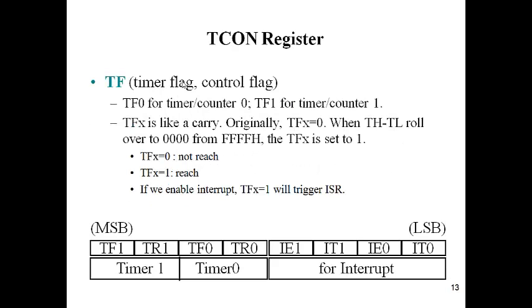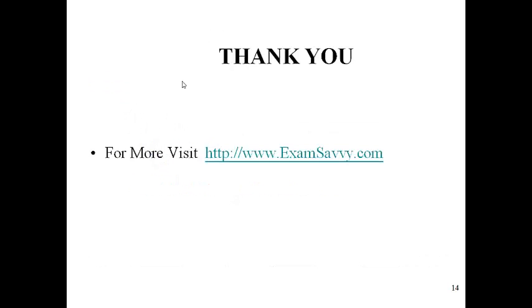TF is the timer flag, which is called a control flag. If there is an interrupt, it will be set to 1. It will trigger the interrupt service routine. In case of interrupts, IT, IE, interrupt timer, interrupt enable for timer 0 and timer 1 come into picture. Thank you.